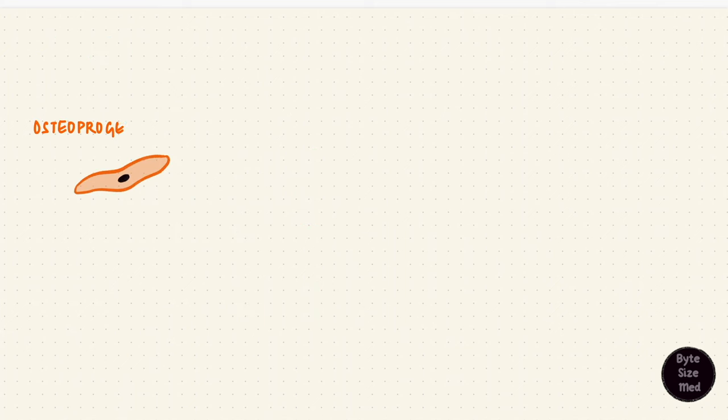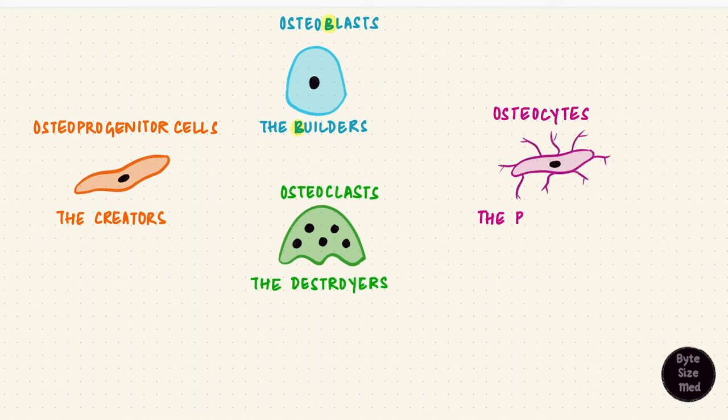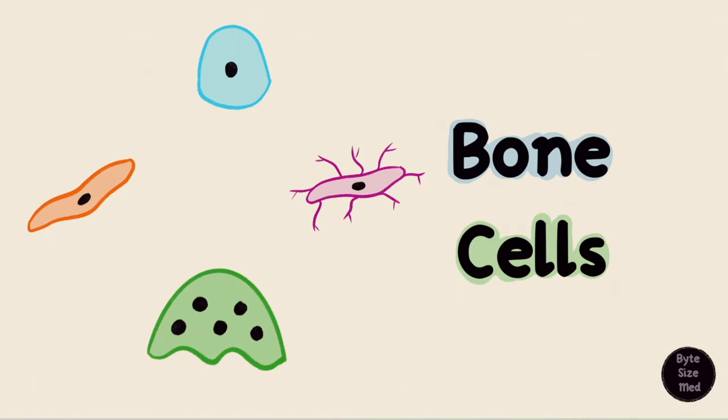So the osteogenic cells are the creators. The osteoblasts are the builders. The osteoclasts are the destroyers and the osteocytes are the prisoners. Those are the cells of bone tissue and they work together.